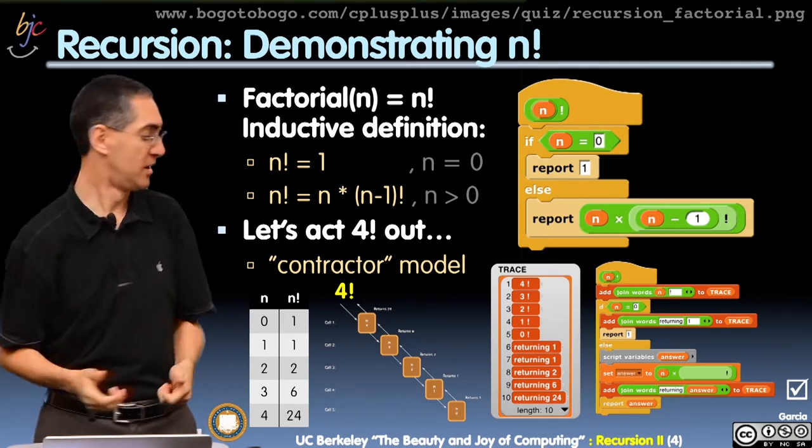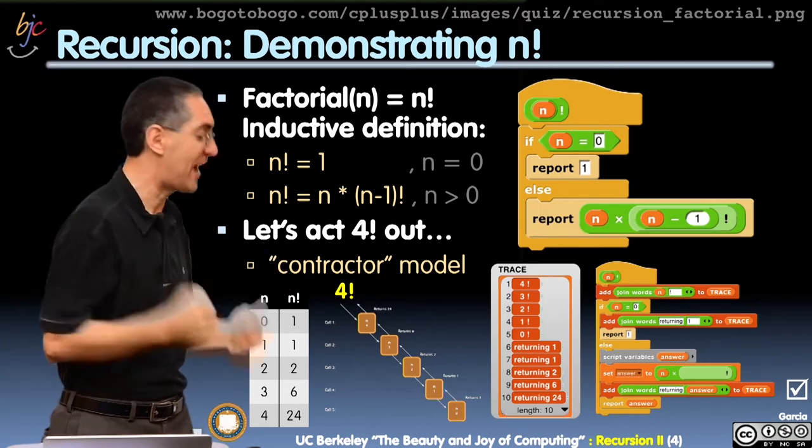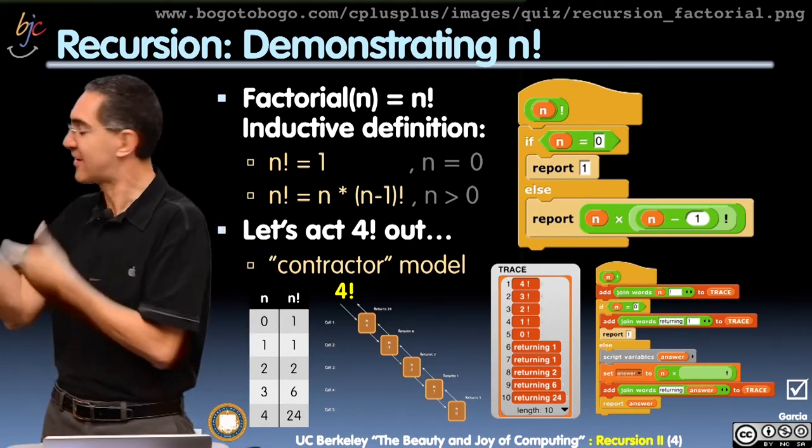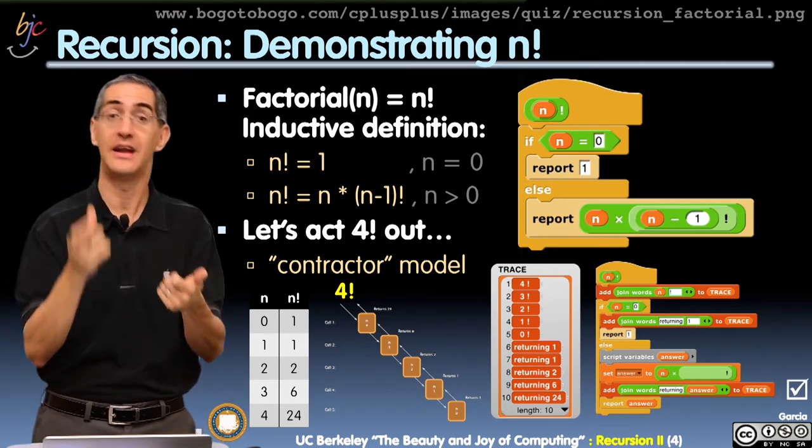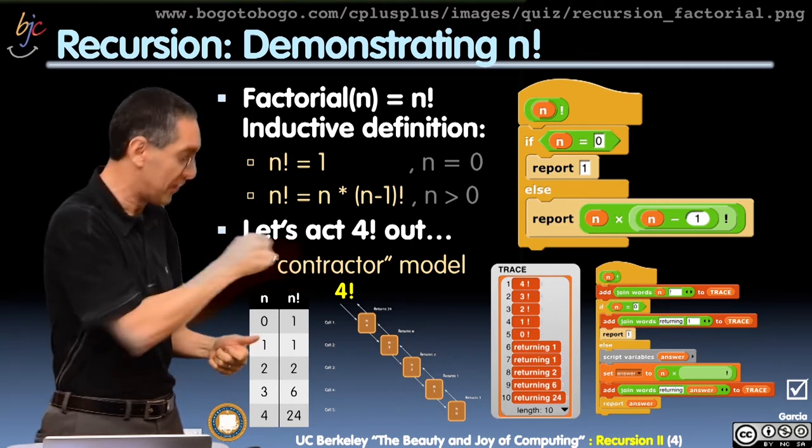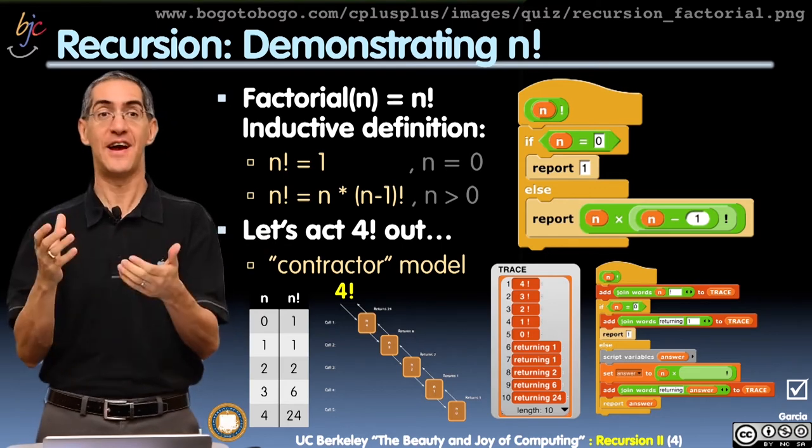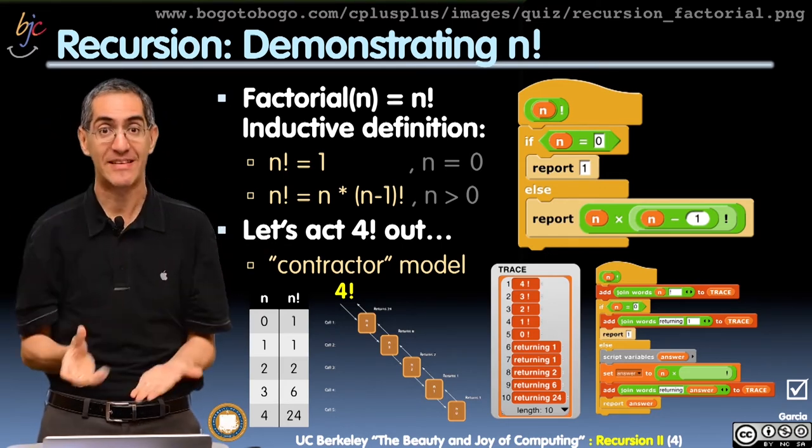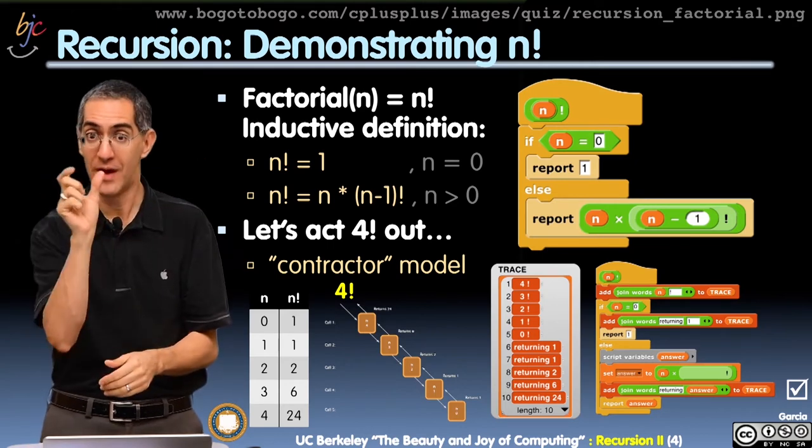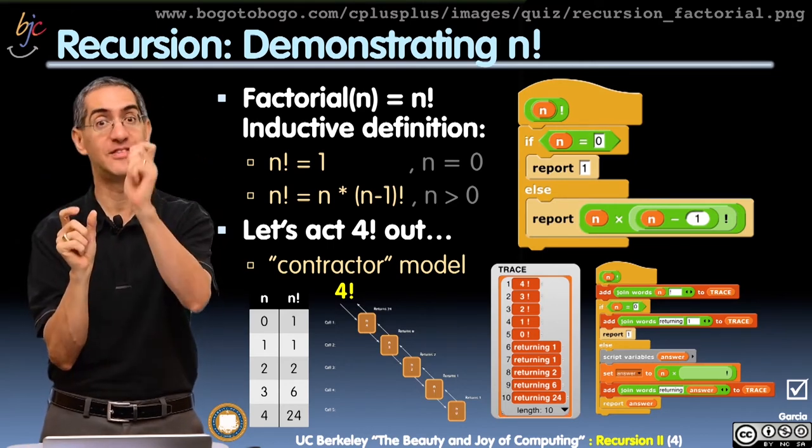Now I'm going to hire a third person. I need to wake up, I need to get 2 factorial. Oh, OK, 2 factorial, let's see, is 2 equal to 0? No. All right, 2 times 1 factorial. I need to hire somebody to do 1 factorial. Wake up. OK, 1 factorial, is 1 equal to 0? No. I need to do the next line, the recursive case. 1 times 1 minus 1 is 0 factorial.